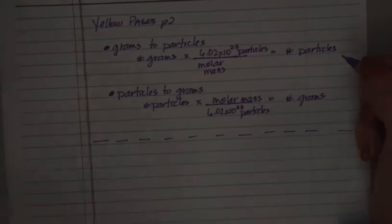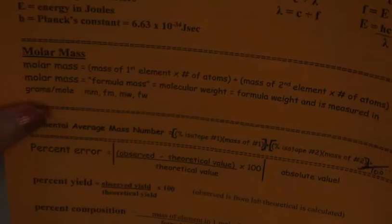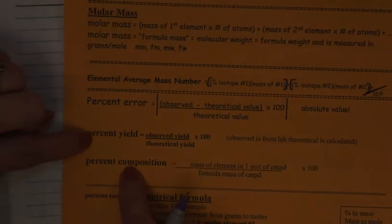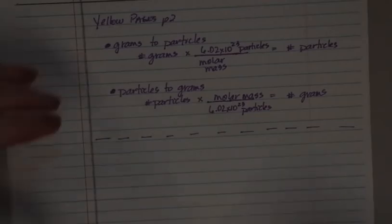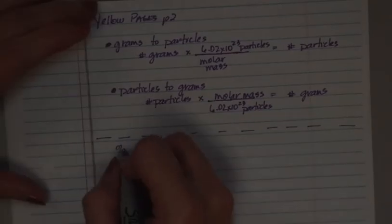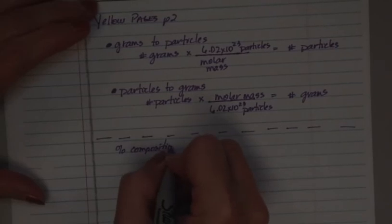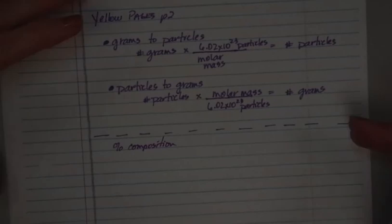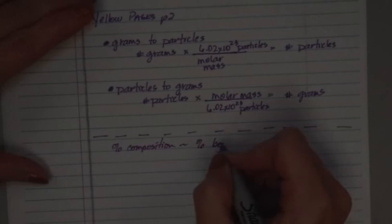If you look at page one of your yellow pages, we have the formula for percent composition. Make sure you don't get it confused with percent error and percent yield. Percent composition is right here. So percent composition is really pretty simple. Percent composition is the percent by mass of each element in a compound. Percent by mass, because we're talking grams.